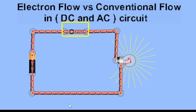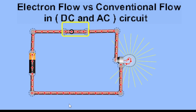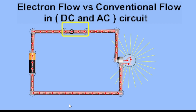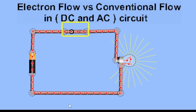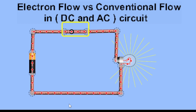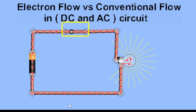Historically speaking, before the convention was established and before the discovery of the electron, it was assumed in circuit analysis and electrical engineering that the flow of current was in the conventional direction. Since the discovery of the electron, we have established two flows of current: electron flow and conventional flow. In solving circuit problems, the arrows in circuit diagrams point in the conventional flow direction, so we use conventional flow when solving circuits.